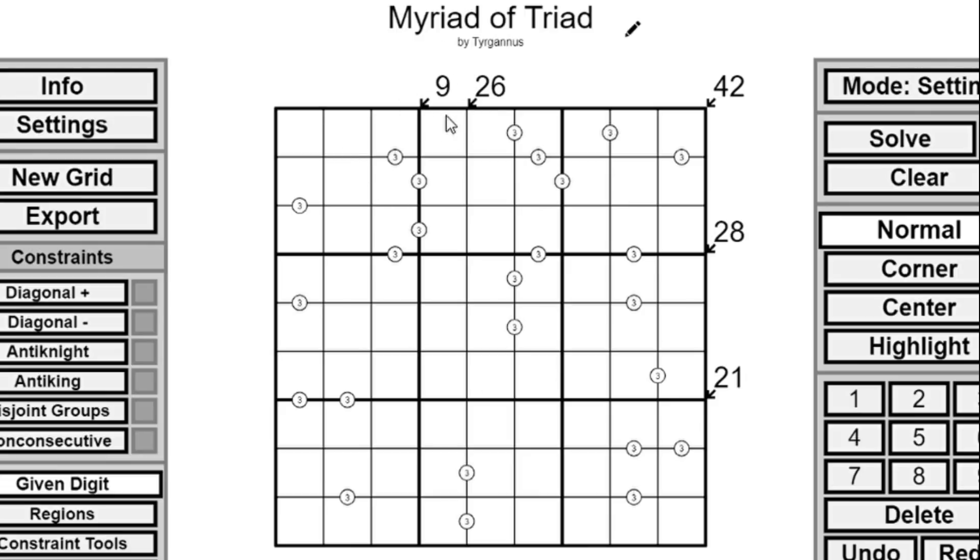Okay, let's get into this. The first two clues I put in Myriad of Triad are actually these 9 and 21 Little Killers. Now, these are magical because of modular arithmetic. And why is that? Well, if we normally count in base 10, mod 3 specifically is like base 3.